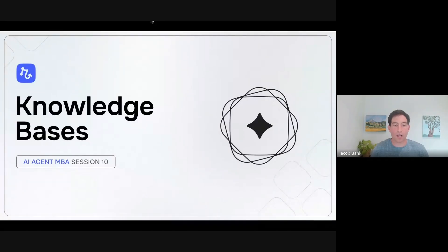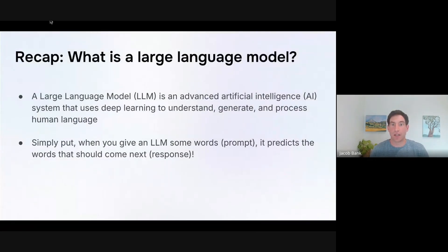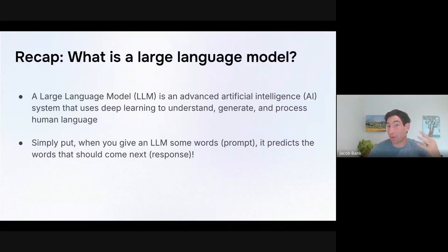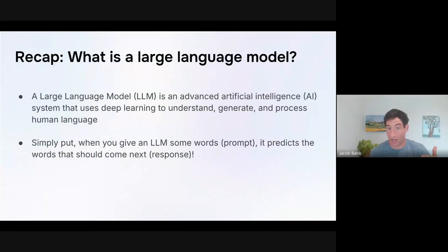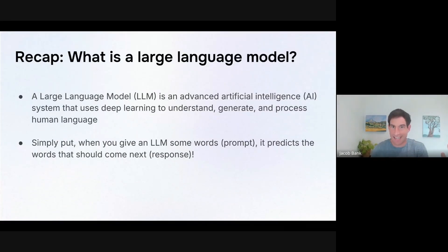By quick way of recap, we talked in the last session about what a large language model is. A large language model is a very complex AI machine that takes in some text called a prompt and predicts the text that is most likely to come after that prompt, which is the response. It could be a continuation of the thought, a response, or a summary — depending on what you put in the prompt, the response will differ. Fundamentally, it's the machine that turns text into the next most likely text to occur after that.